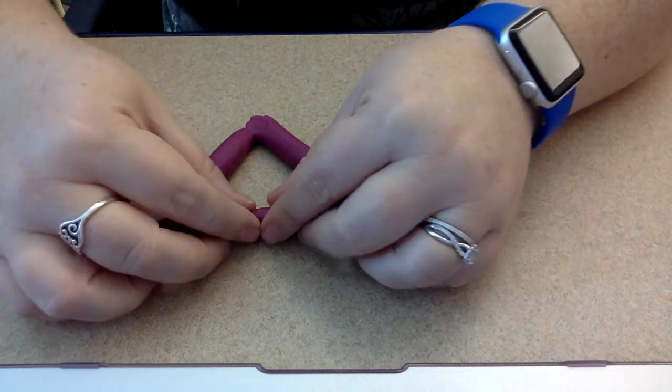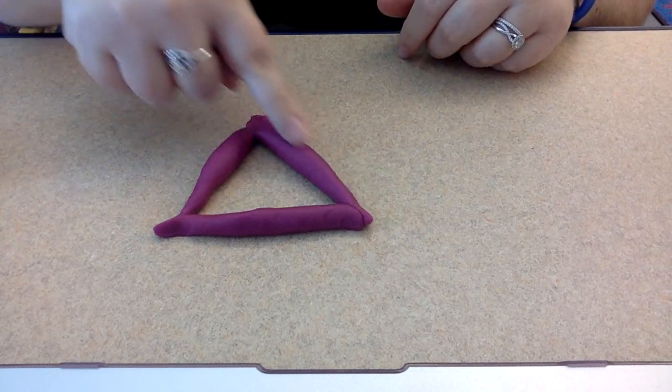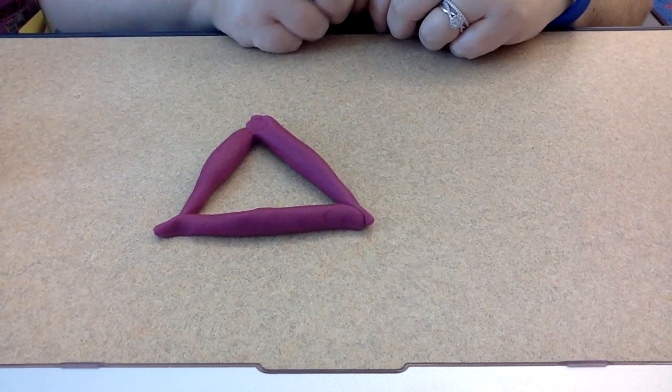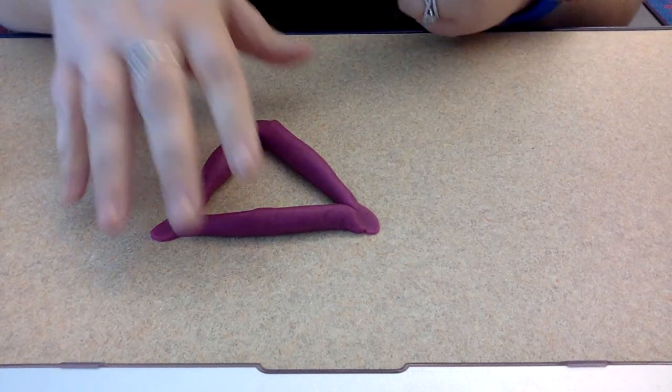So I'm going to need three pieces of Play-Doh to make three straight lines. So if I connect those pieces together, what shape do I have? A triangle has one, two, three sides and one, two, three corners. So I made a triangle.